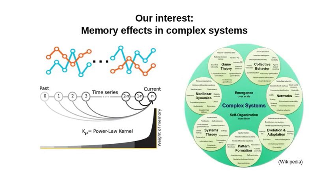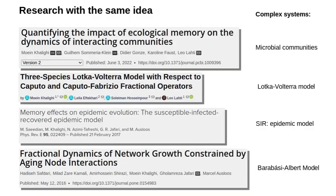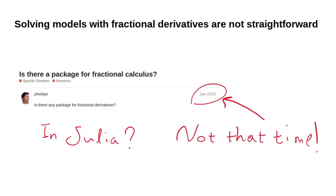But we would like to study the impact of memory effects in community models, including components that interact with each other. This idea has been used in many articles in the context of biology, ecology, epidemiology, social science, and so on. And of course, the concept of memory in each case is different, with different meanings.